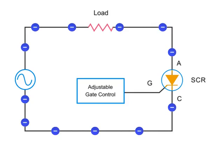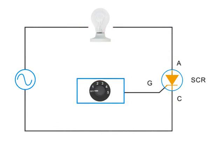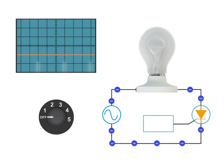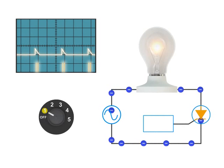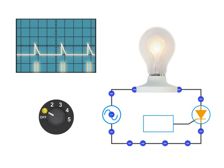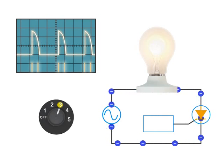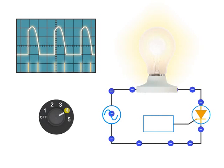A common application of SCRs is in lightbulb dimmers. Here is a circuit that contains a lightbulb and a SCR. As the switch at the gate controller is adjusted to control power in the AC circuit, note the timing of the gate pulse and the subsequent change in the waveforms. Also, observe that average current flow increases and the lightbulb becomes brighter.